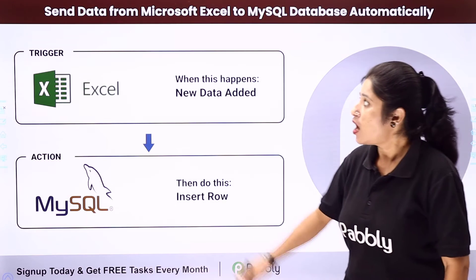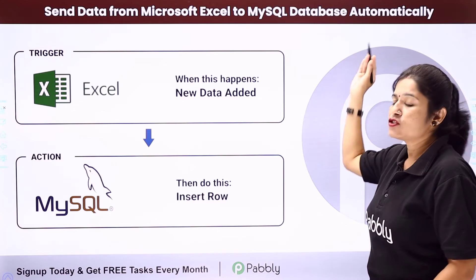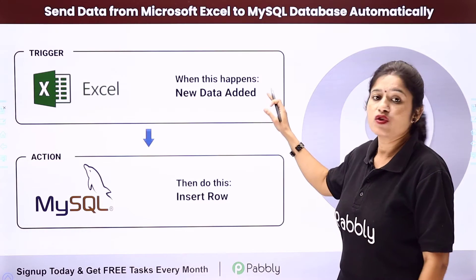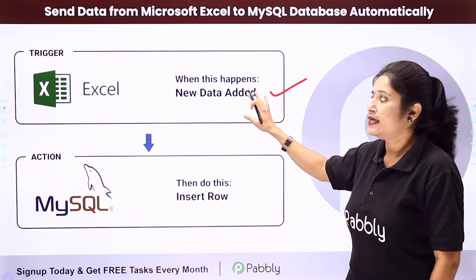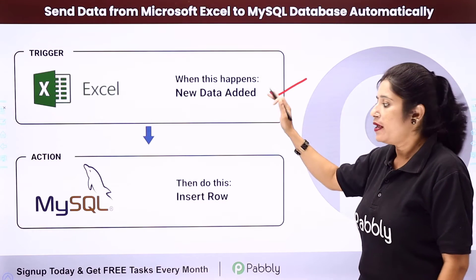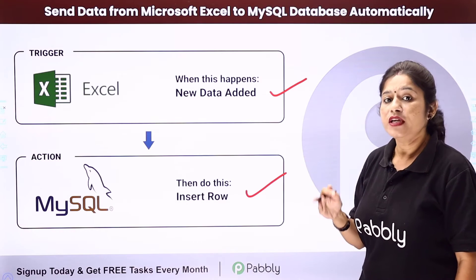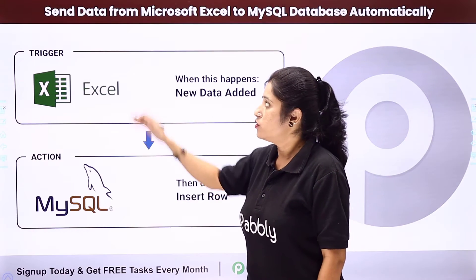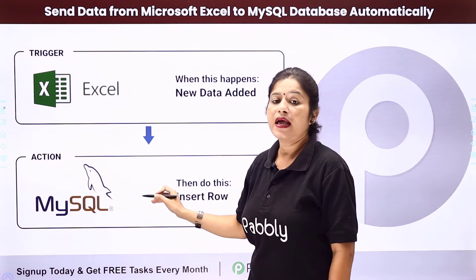In this video we are going to learn how you can send data from Microsoft Excel to MySQL database automatically. The idea is that whenever new data is added to your Excel spreadsheet, automatically the same data should be added to your MySQL database table as a new row. For that you need to integrate MS Excel with MySQL, where the trigger application would be MS Excel and the action application would be MySQL.